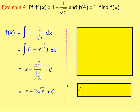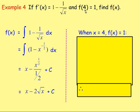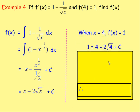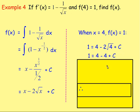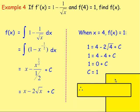That is your general solution. Looking at the additional information, f(4) equals 1 means that when x is 4, f(x) equals 1. So replace f(x) with 1 and x with 4: 1 equals 4 minus 2 times the square root of 4, plus c. Work that out: 4 minus 2 times 2 equals 4 minus 4, so 1 equals 0 plus c, meaning c is 1.